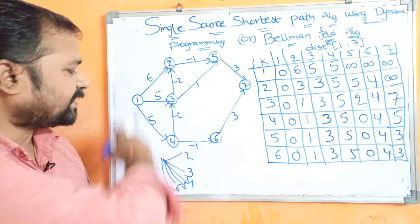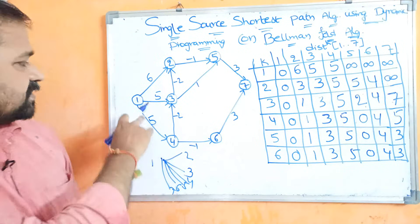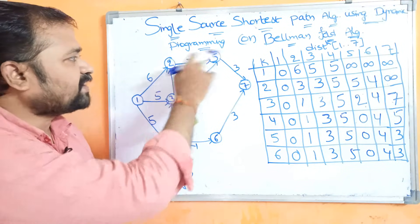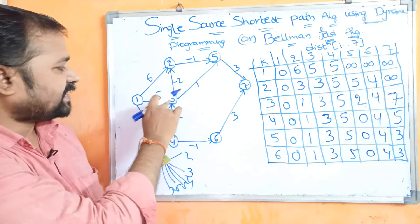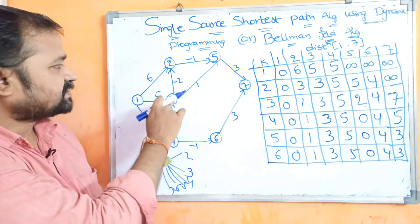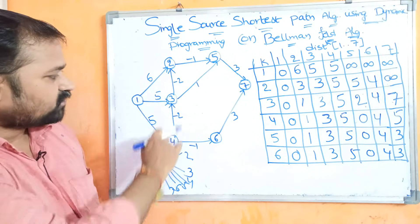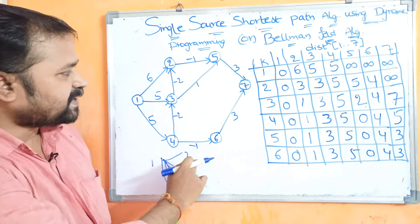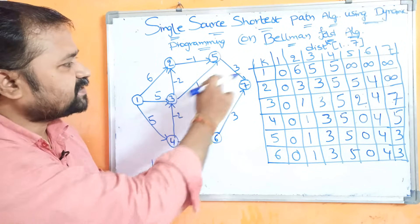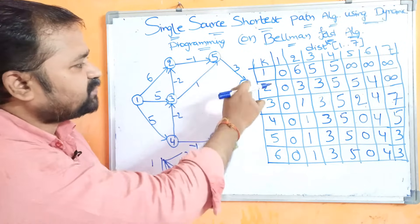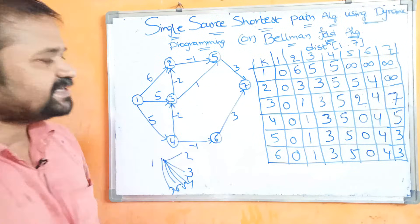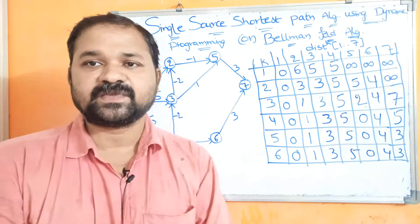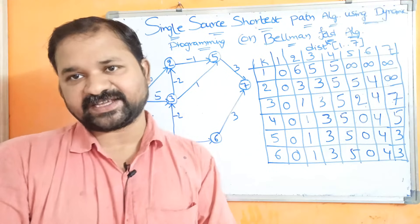Here we have a graph. The cost from 1 to 2 is 6, from 2 to 5 is minus 1, from 3 to 2 is minus 2, from 4 to 3 is minus 2, from 4 to 6 is minus 1, from 3 to 5 is 1, from 5 to 7 is 3, and from 6 to 7 is 3. Totally we have 7 vertices. Now we need to find the shortest path.